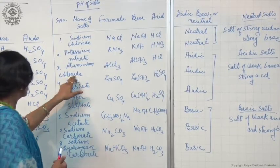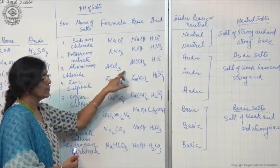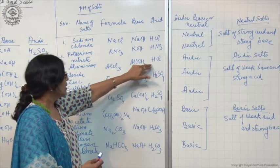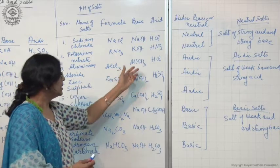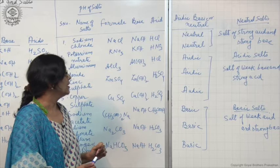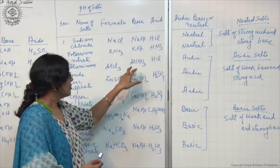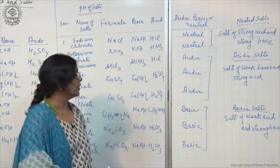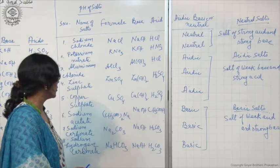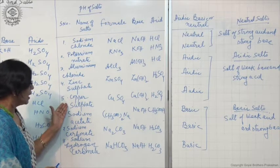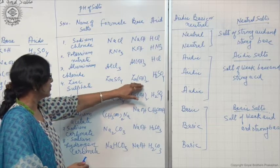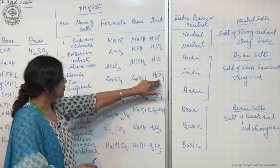The third type is aluminium chloride, formula AlCl₃. It is formed from a weak base, aluminium hydroxide, and a strong acid HCl. When tested with blue litmus paper, it turns the colour of blue litmus paper to red, showing that the aluminium chloride salt solution is acidic in nature. So these are acidic salts — formed by the combination of weak base and strong acid. Their solution in water is acidic. Other examples are zinc sulphate (ZnSO₄, formed from Zn(OH)₂ and H₂SO₄) and copper sulphate (CuSO₄, formed from Cu(OH)₂ and H₂SO₄).